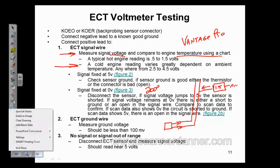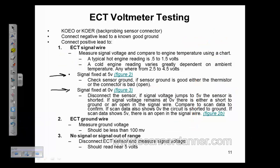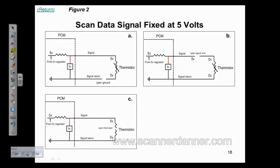Alright, so what do we do with these two scenarios: signal fixed at five, signal fixed at zero? Very, very similar analysis with the scan tool. Signal fixed at five — let's go to figure two. Check your sensor ground. If your sensor ground is good, either the thermistor or the connector is bad. So in figure two: signal fixed at five, we're using our voltmeter, checking our signal, and we're reading five volts on the signal wire.